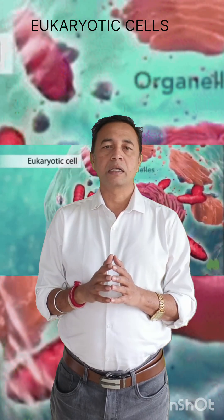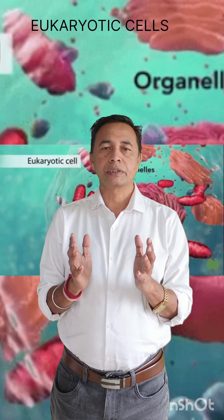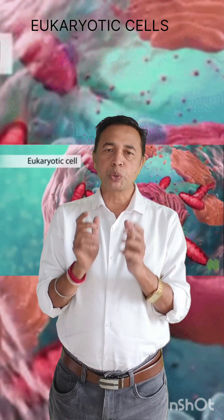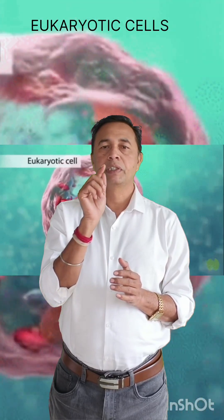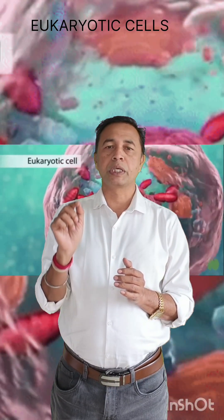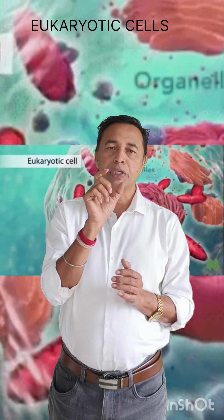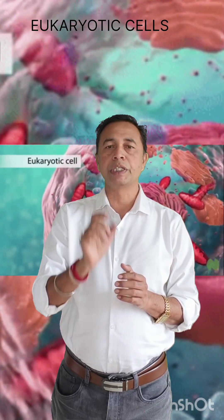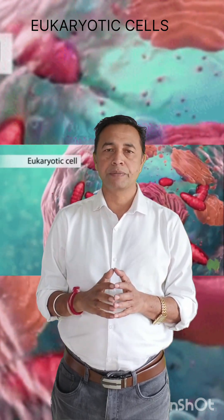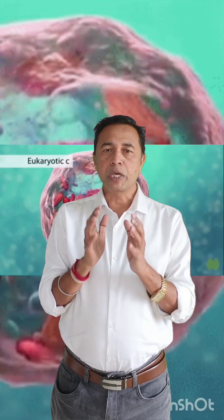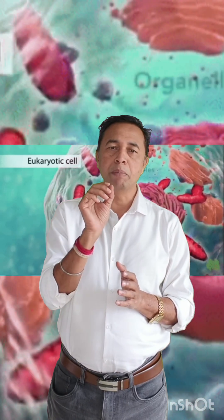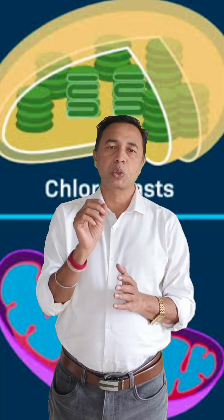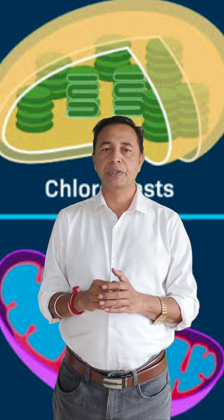Eukaryotic cells are larger and complex, with the presence of a true nucleus — that is, the nucleus with a prominent nuclear membrane. The nucleus encloses the DNA in it. Eukaryotic cells also have membrane-bound organelles like mitochondria, chloroplast, etc.